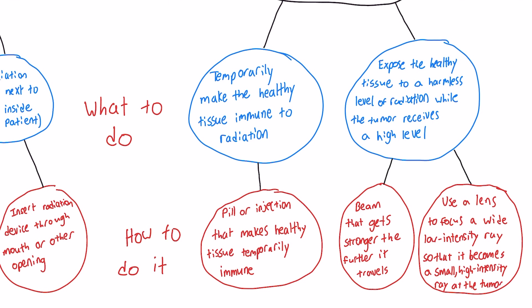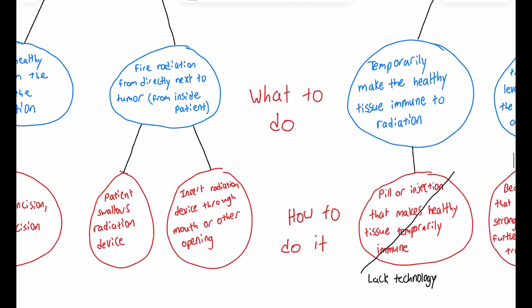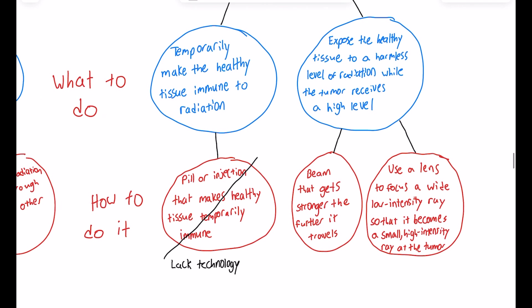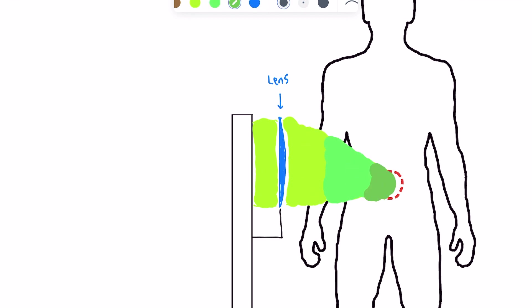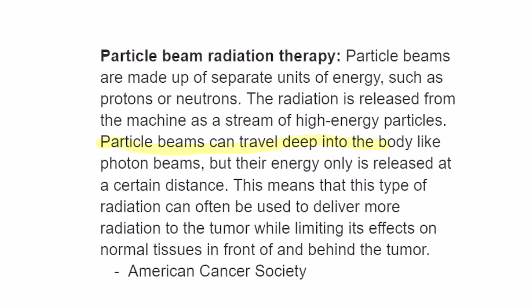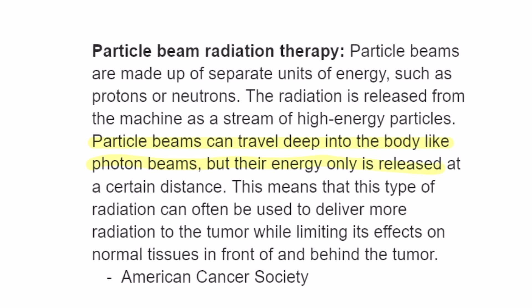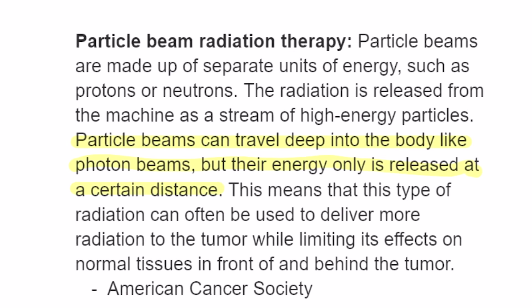The doctors discussed the various options, weighing how effective and realistic each one was. Some they didn't like because they required not-yet-existent treatments — like making healthy tissue temporarily immune to radiation, a swallowable radioactive device, or a beam that gets stronger as it travels. In the end, they decided to use a lens to focus a wide low-intensity x-ray into a narrow high-intensity x-ray. This proved to be an effective method for cancer treatment. Recently, medical scientists have developed particle beam radiation therapy, which fires a beam that only releases radioactive energy at a certain distance. Using the Dunker diagram, the doctors were able to conceptualize something similar to particle beam radiation therapy even though the necessary technology didn't exist at the time.